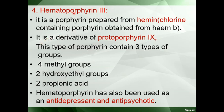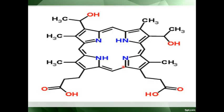Hematoporphyrin 3 is a derivative of protoporphyrin 9, and it contains methyl groups, hydroxyethyl groups, and the propionic acid group. Hematoporphyrin has also been used as an antidepressant and antipsychotic. Here you can see the methyl groups — 1, 2, 3, and 4 — attached, along with the propionic acid groups. In this way, different types of protoporphyrins are created.